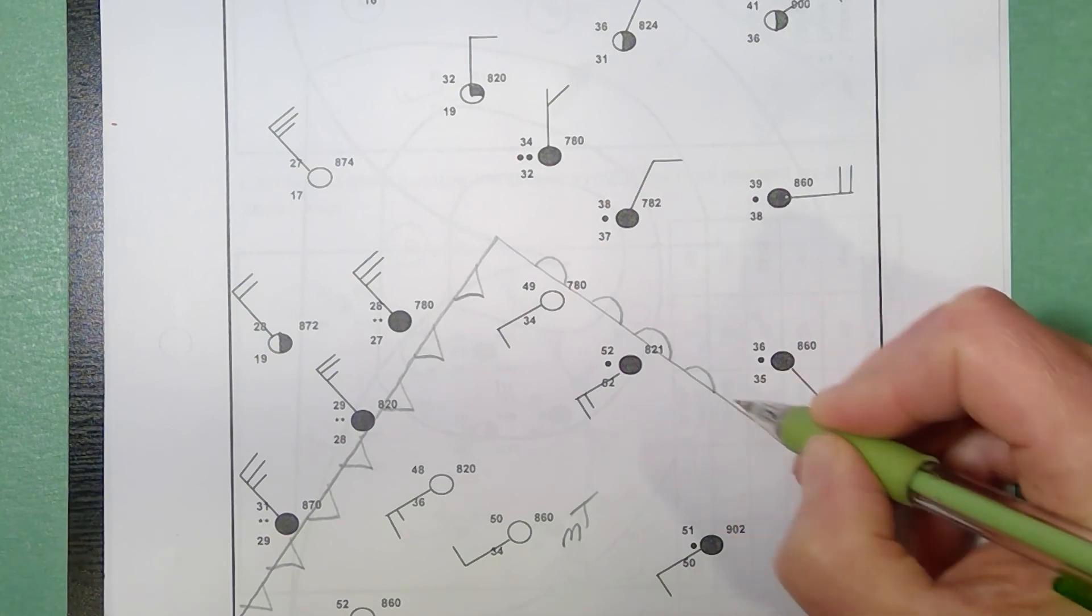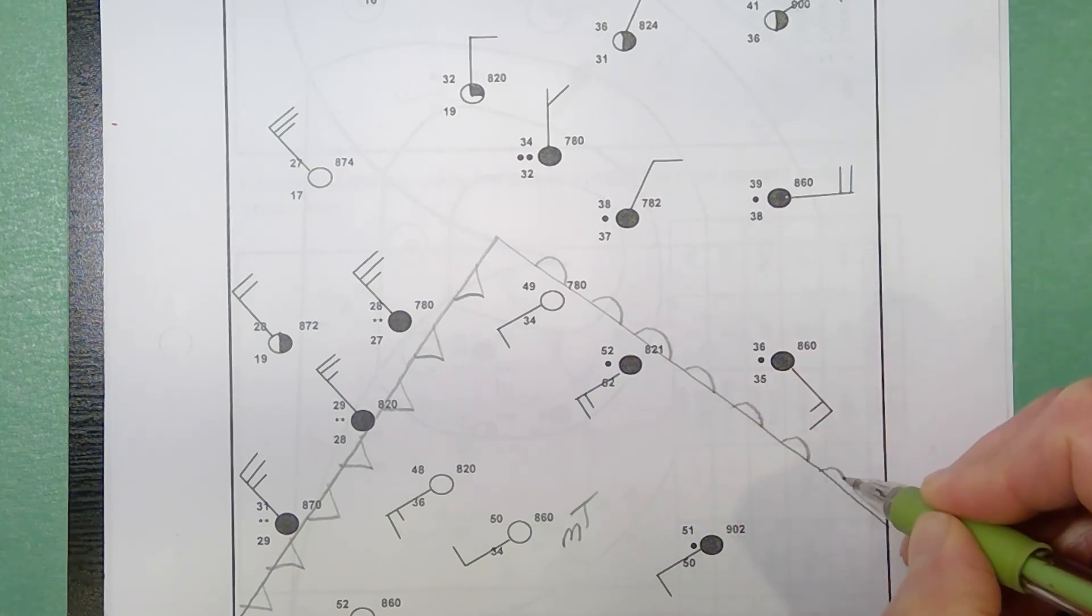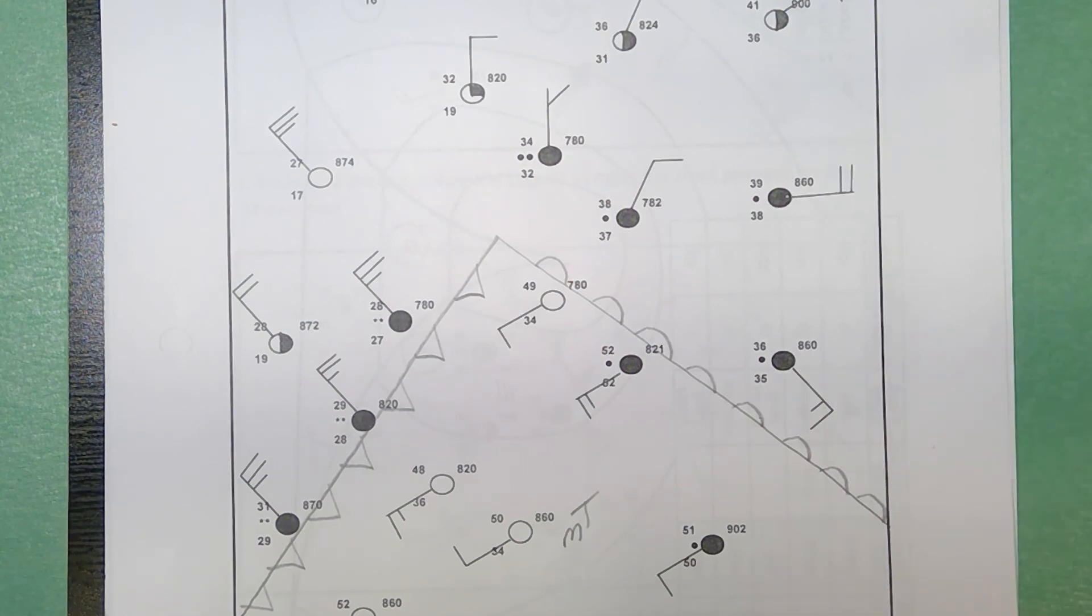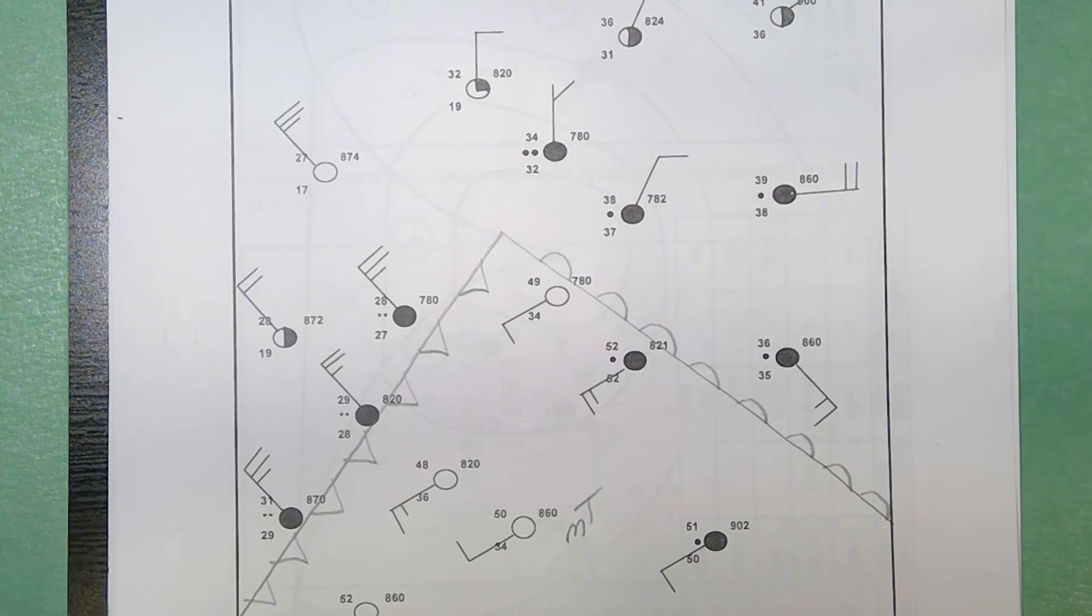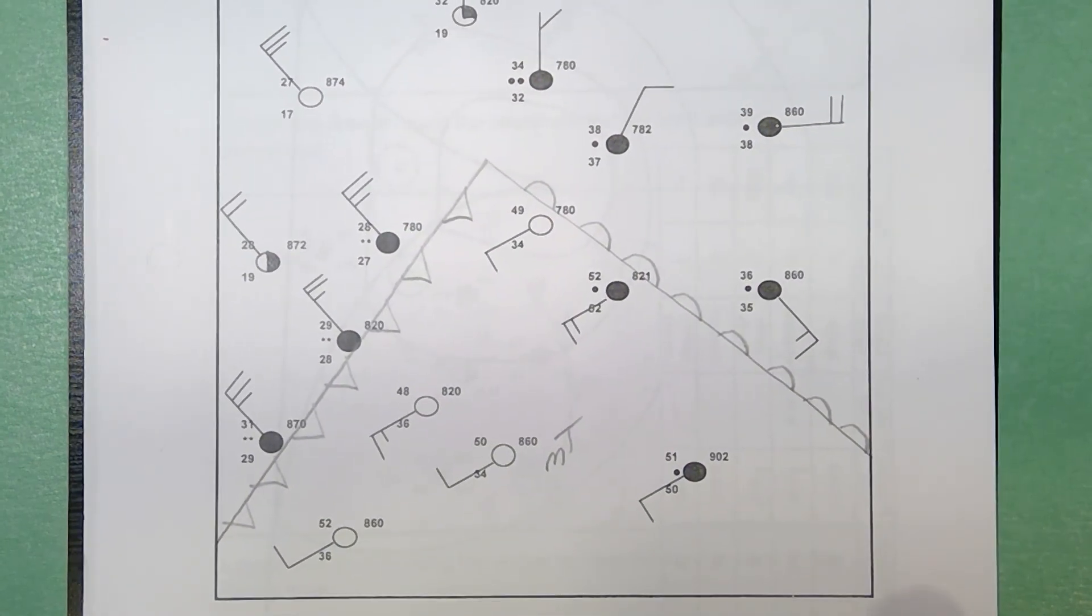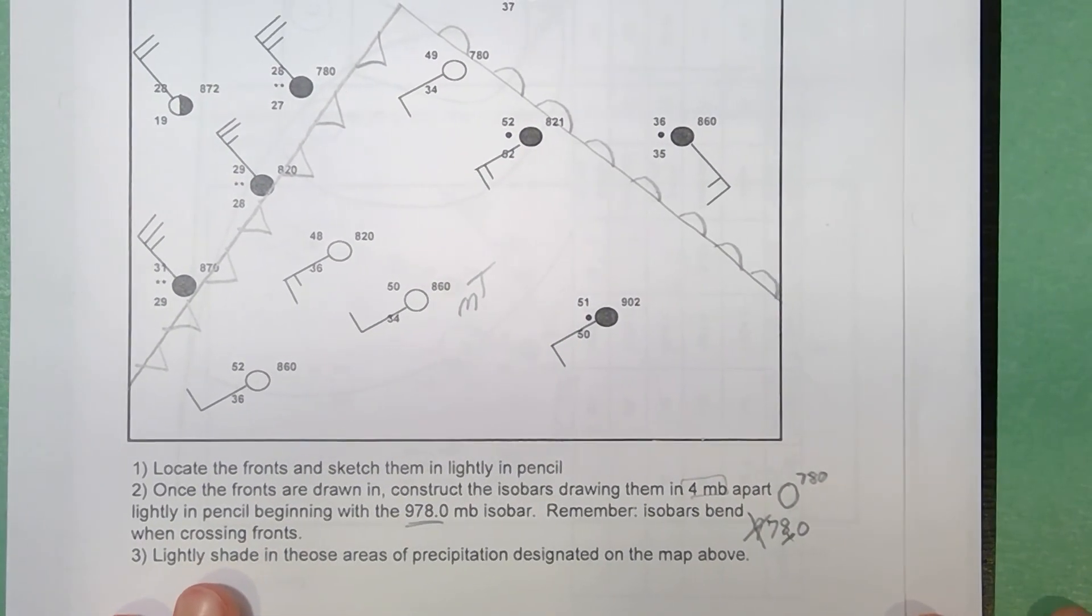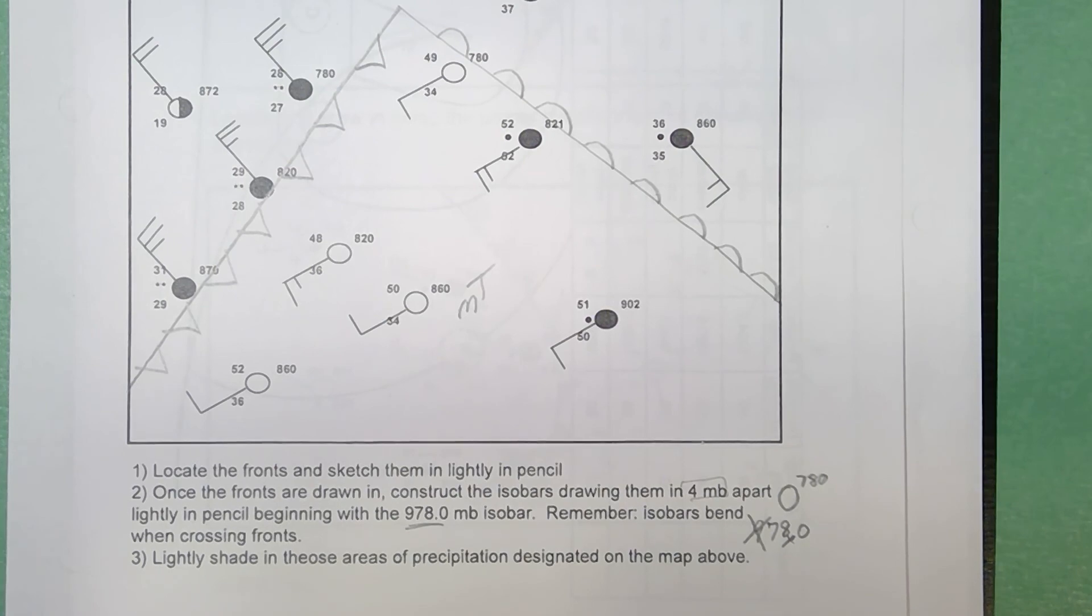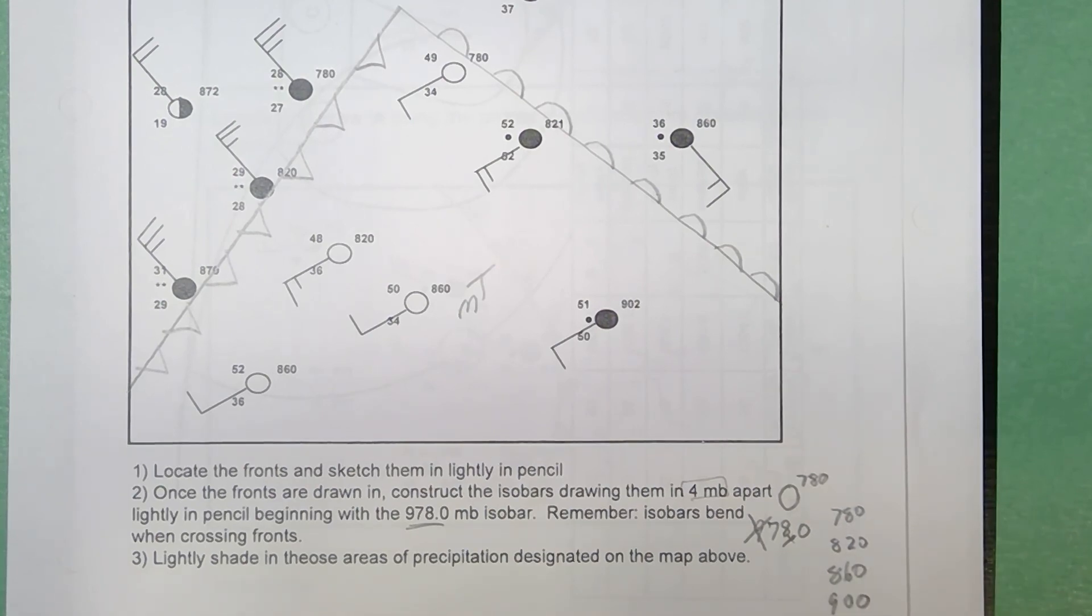So we just finished step one on the bottom. Now that you've done that you want to do the information for part two. Part two says draw the isobars. Isobars should be four millibars apart and you're going to start off with the 978 millibar isobar. If I take 978.0 you're going to eliminate the nine. You're going to get rid of the decimal. So 978.0 would look like 780. All right so you're going to start at 780. You're going to go by intervals of four millibars. So you're going to draw isobars for 780, 820, 860, and 900 are what's going to be recorded on the station model.